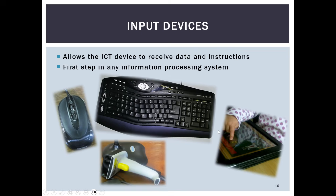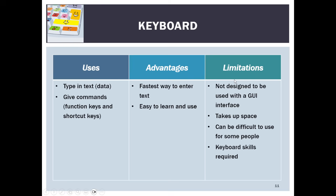The most common input device is our keyboard. This is the first step in any information processing system. It's used to type in text and give commands. The advantage is it's the fastest way to enter text and easy to learn and use. However, a keyboard was never designed to work with a GUI interface, it does take up space, and depending on the size can be difficult for some people to use — others need keyboard skills.